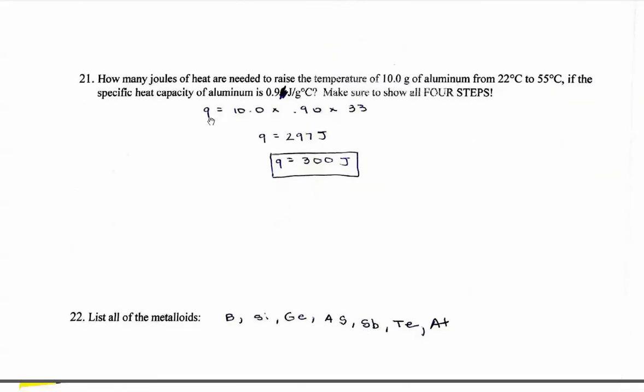Problem 21. Q, it's asking how much heat, so I don't know. Q equals 10 grams, that's my mass, times my specific heat, which is 0.9, times 33. Because Tf, final, is 55 minus 22 is 33. So you just do a simple multiplication. Notice, this is one sig fig, this is three sig figs, and this is two sig figs. So my final answer needs to be 300 joules.